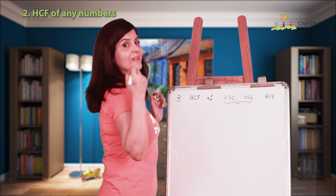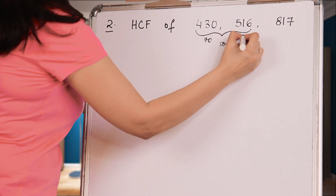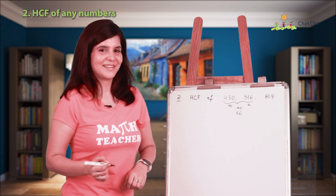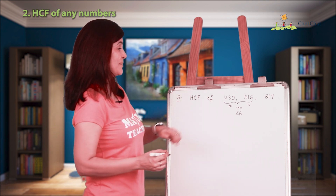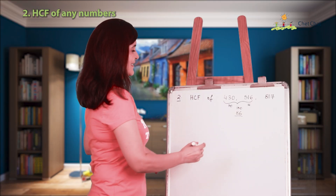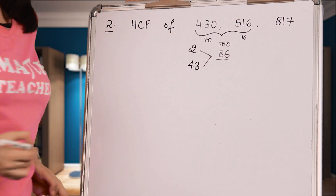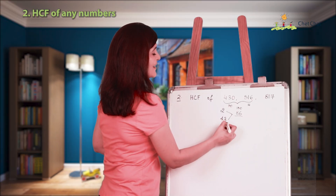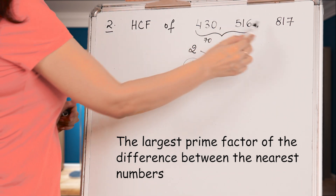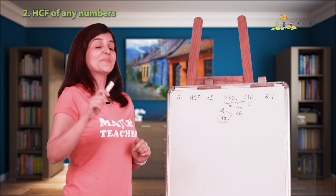Find the difference between them. Using the same shortcut as before, taking 500 as reference gives us 70 and 16, so the difference is 86. Now factorize 86: we get 2 × 43. Pick the larger of the two factors — that's 43 — and that will be the HCF of these three numbers. Try it yourself!